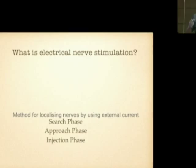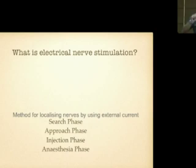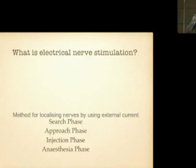Next is the injection phase: whenever you get the nerve at the lowest amplitude, it indicates the needle is close to the nerve, and you deposit the local anesthetics. That is called the injection phase. Next is the anesthesia phase: if you deposit the local anesthetics, it will reversibly block the nerves to painful stimuli. After this phase, you assess your block whether it is working or not, and if it is working, you go for surgical stimulus. That completes, in a nutshell, the peripheral nerve stimulation technique.